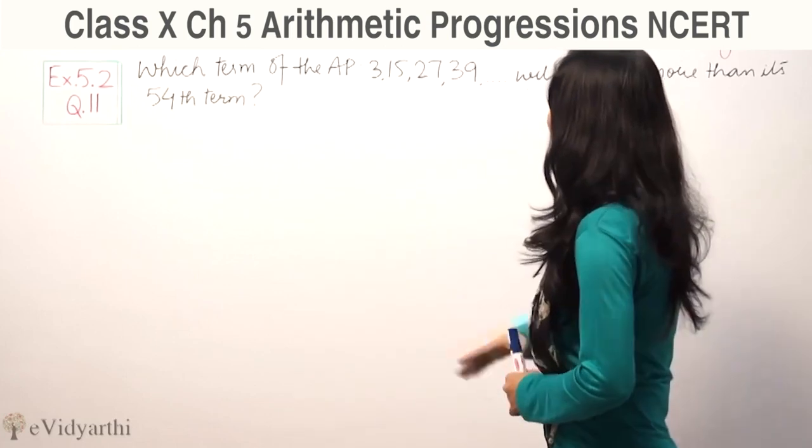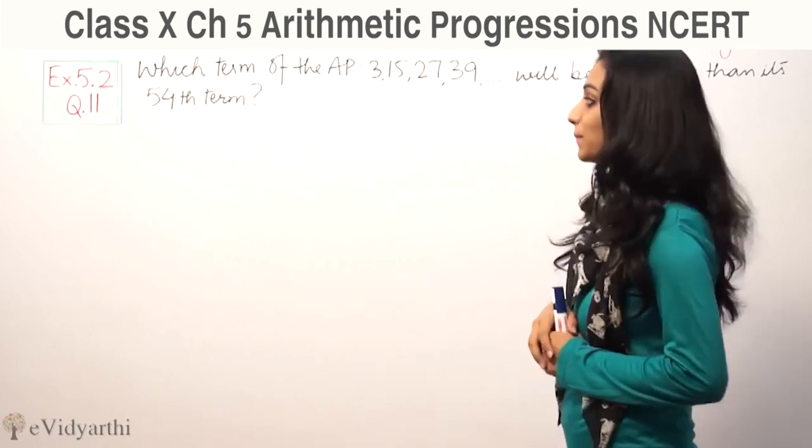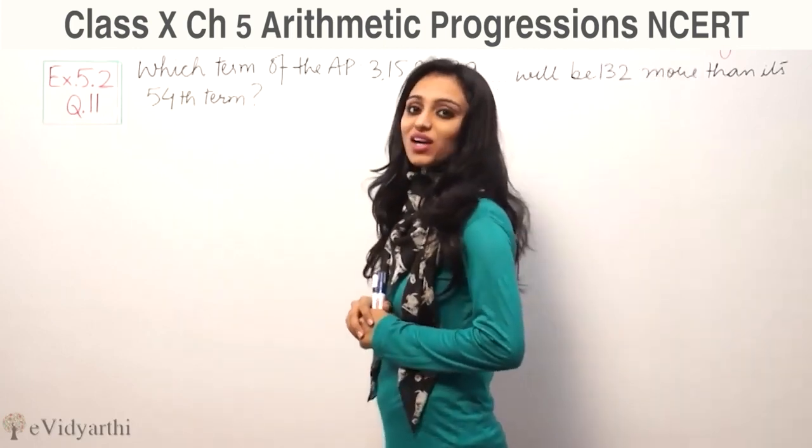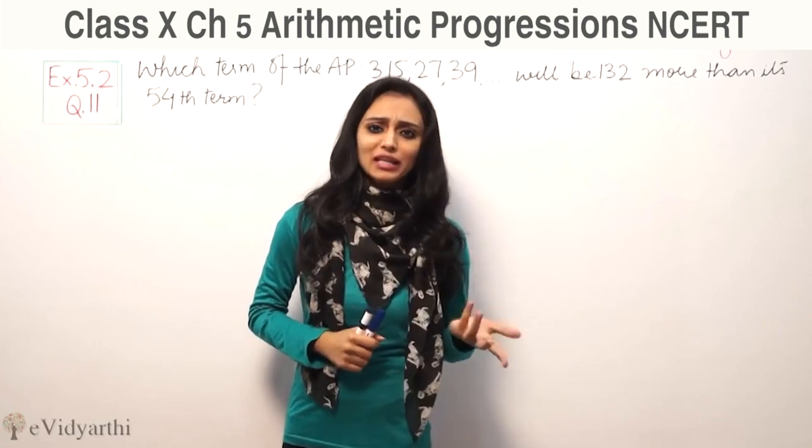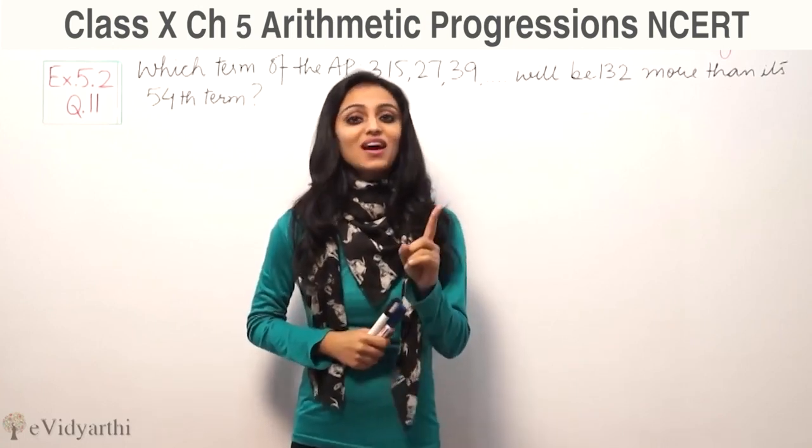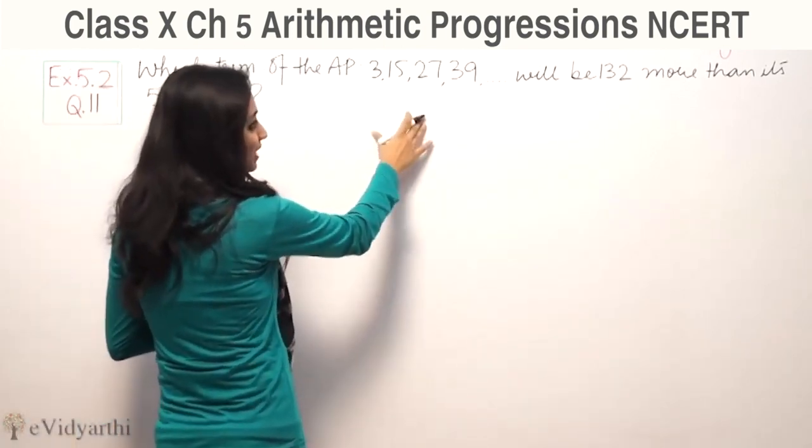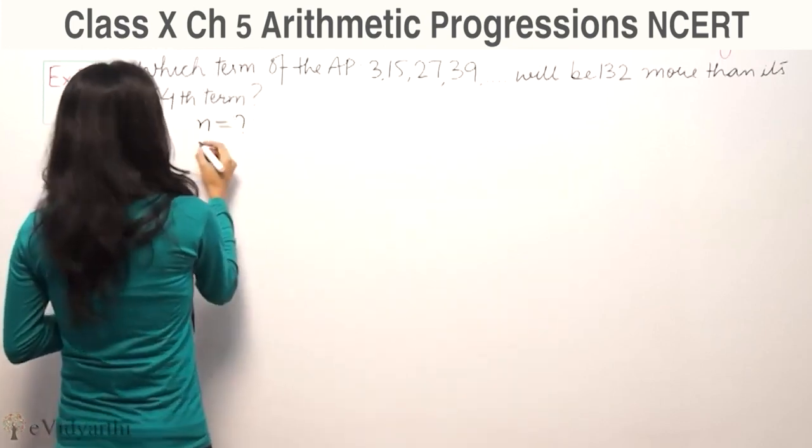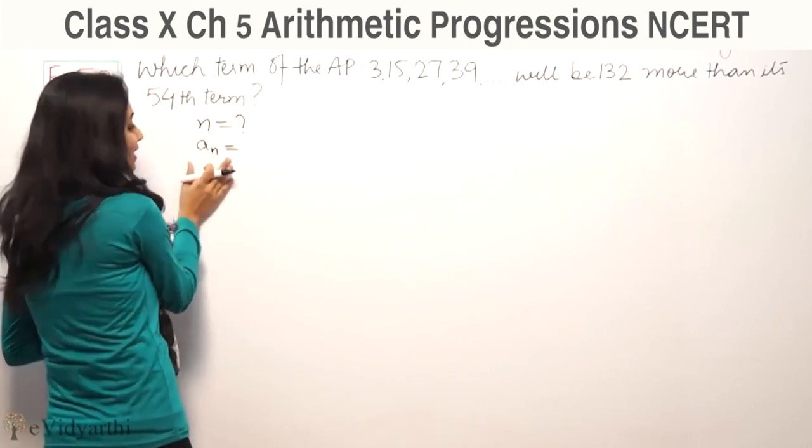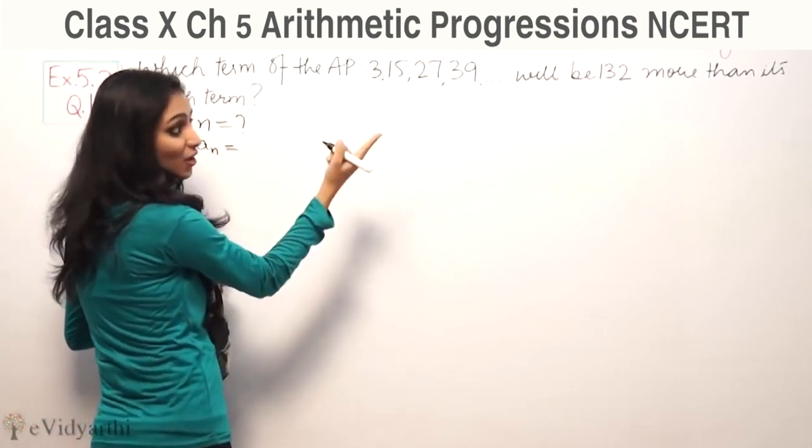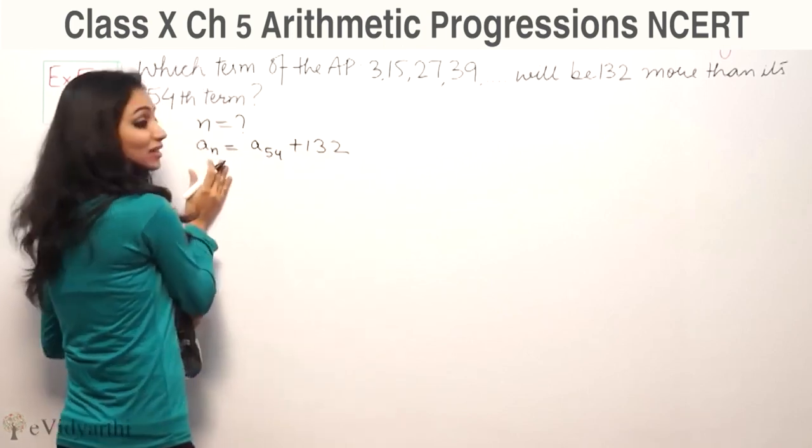The question asks which term of the AP 3, 15, 27, 39... will be 132 more than its 54th term. Let us find which term is 132 more than the 54th term.